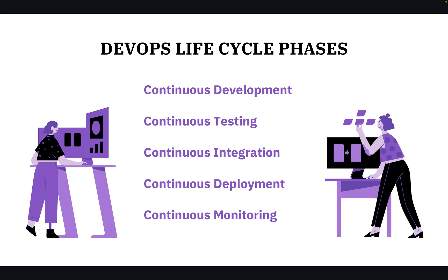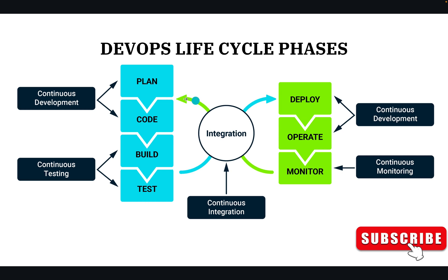We are going to discuss each and every phase in detail, but first we start with continuous development. Planning and coding are part of continuous development. Build and test come under continuous testing. After the test, we integrate the tested code with the build, and then we integrate the tested build code with the existing code — that is called continuous integration.